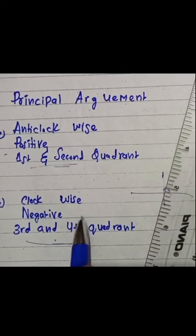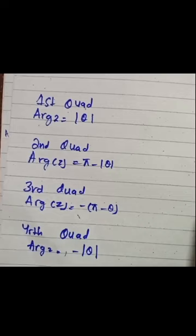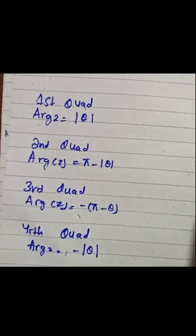There are different conditions and formulas for each quadrant. In the first quadrant, the argument equals theta. In the second quadrant, it is pi minus theta. In the third and fourth quadrants, we have a negative sign — because in the third and fourth quadrants we always move clockwise and the argument is always negative.